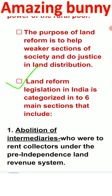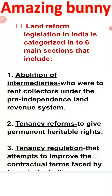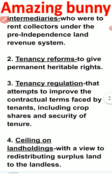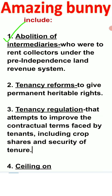Because the intensity of the problem varies, land reform laws are different in different states. Depending on where the problem is more severe, the state government decides what should be done and at what pace — how fast and to what extent this land reform practice has to be followed. There are six sections that are the target under land reform.